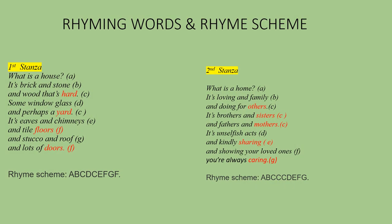Now let's learn about the rhyming words and the rhyme scheme. Rhyming words are highlighted in red color. In the first stanza, the rhyming words are hard, yard, floors, and doors. In the second stanza, the rhyming words are others, sisters, mothers, sharing, and caring. The rhyme scheme of the first stanza is ABCDCEFGF.